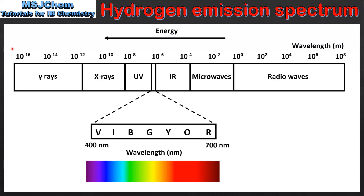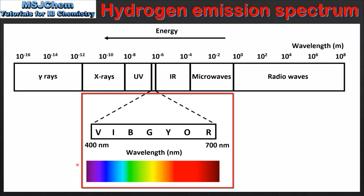To begin we need to look at the electromagnetic spectrum. The electromagnetic spectrum shows all the wavelengths or frequencies of radiation. These range from low energy radio waves to high energy gamma rays. In this video we'll mainly focus on the visible region. The visible region comprises of light with wavelengths of approximately between 400 and 700 nm, with red light having the longest wavelength and violet light having the shortest.